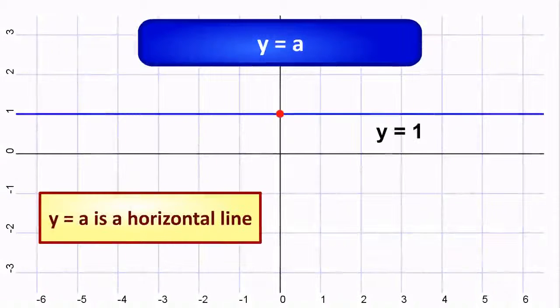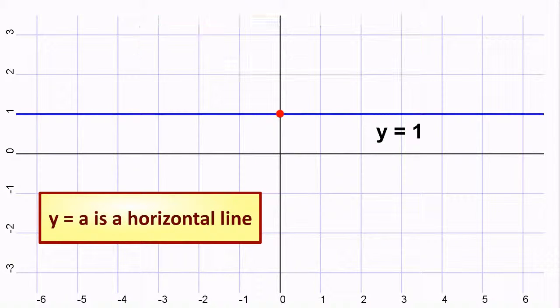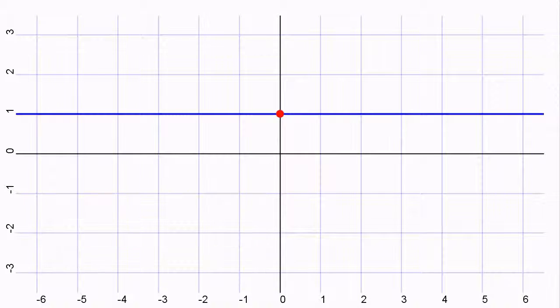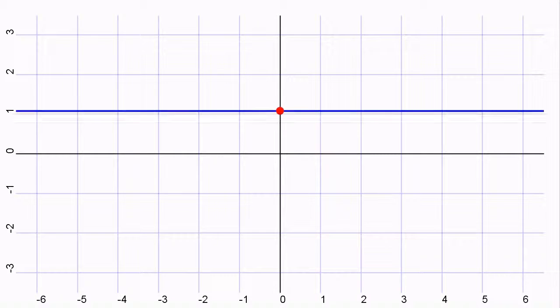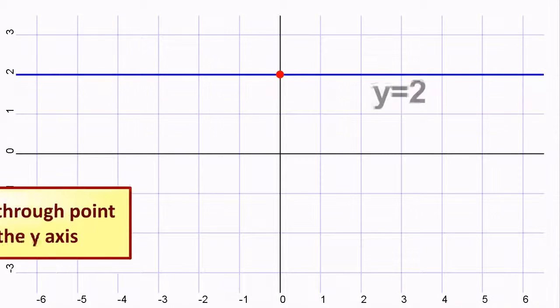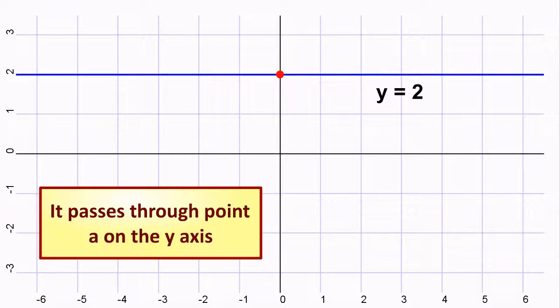Y equals A is a horizontal line. It passes through point A on the Y axis.